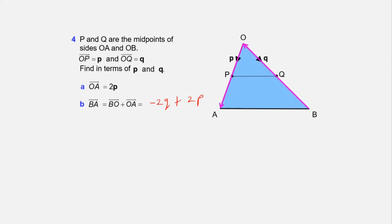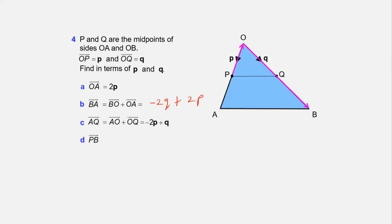Find vector AQ = AO + OQ. Going against, AO = −2p, so AQ = −2p + q. Find vector PB = PO + OB. PO is going against, so it is −p. And OB = 2q, since Q is the midpoint — that is how we get 2q. So vector PB = −p + 2q.